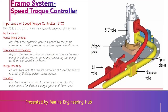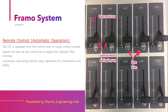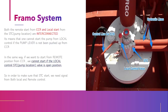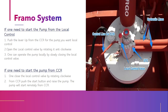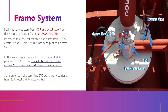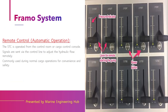In today's video we will learn: what is a speed torque controller, what is the importance of having a speed torque controller, how it is locally and remotely operated, how it is activated, and how the local and remote controls are interconnected. This is Part 3 of the Framo system series. If you want to know about the copper damper and the Framo system line diagram, please watch Part 1 and Part 2 — details are in the description.